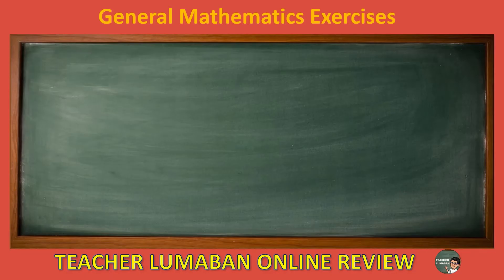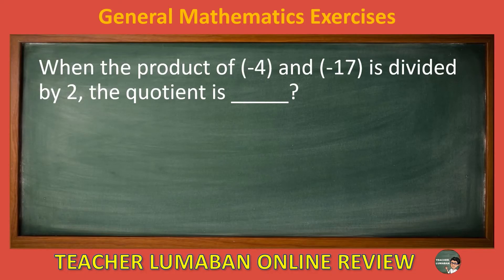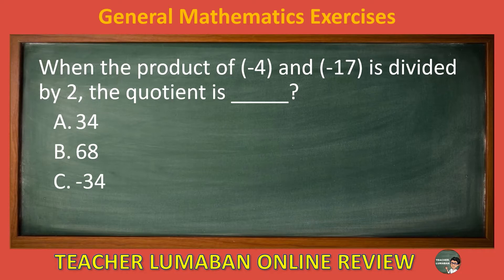When the product of negative 4 and negative 17 is divided by 2, the quotient is blank. Letter A: 34. Letter B: 68. Letter C: negative 34. Letter D: negative 66. Choose the suitable answer based on the given choices in 5 seconds.